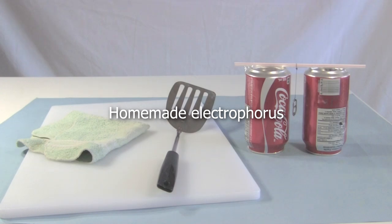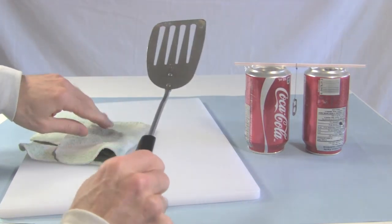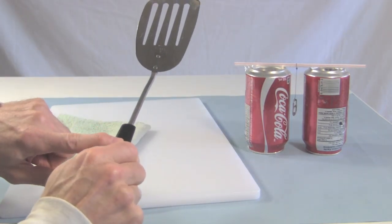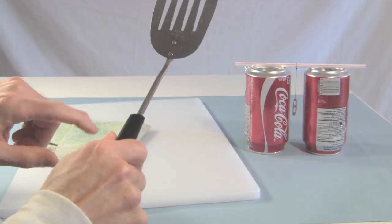Don't have a high voltage source? You can easily make an electrophorus using things from around the house. I have a plastic cutting board, a cotton face cloth, and a metal spatula with a plastic handle. It has to be metal, it has to be plastic, and when you hold it, hold it well away from the metal.